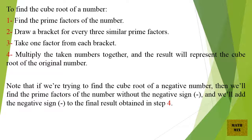Note that if we're trying to find the cube root of a negative number, then we'll find the prime factors of the number without the negative sign, and we'll add the negative sign to the final result obtained in step 4.